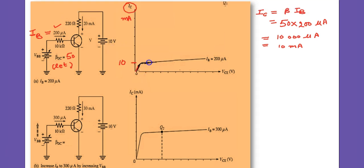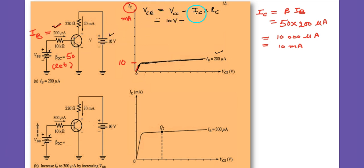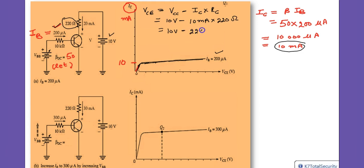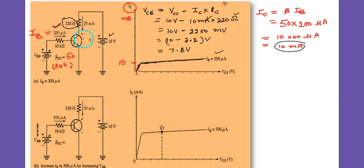The base current of 200 microamperes is fixed. Along the x-axis of the graph is the collector-emitter voltage. The formula is: VCE equals VCC minus IC times RC. VCC is 10 volts and RC is 220 ohms. So VCE equals 10 minus 10 milliamperes times 220 ohms.